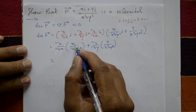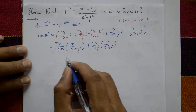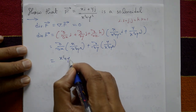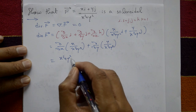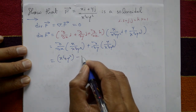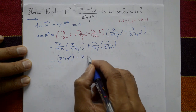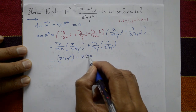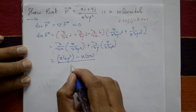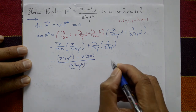Differentiating x/(x²+y²) with respect to x using the quotient rule (u/v form): denominator is x²+y². Differentiating x gives 1, minus x times the derivative of (x²+y²) which is 2x, all divided by (x²+y²) squared.